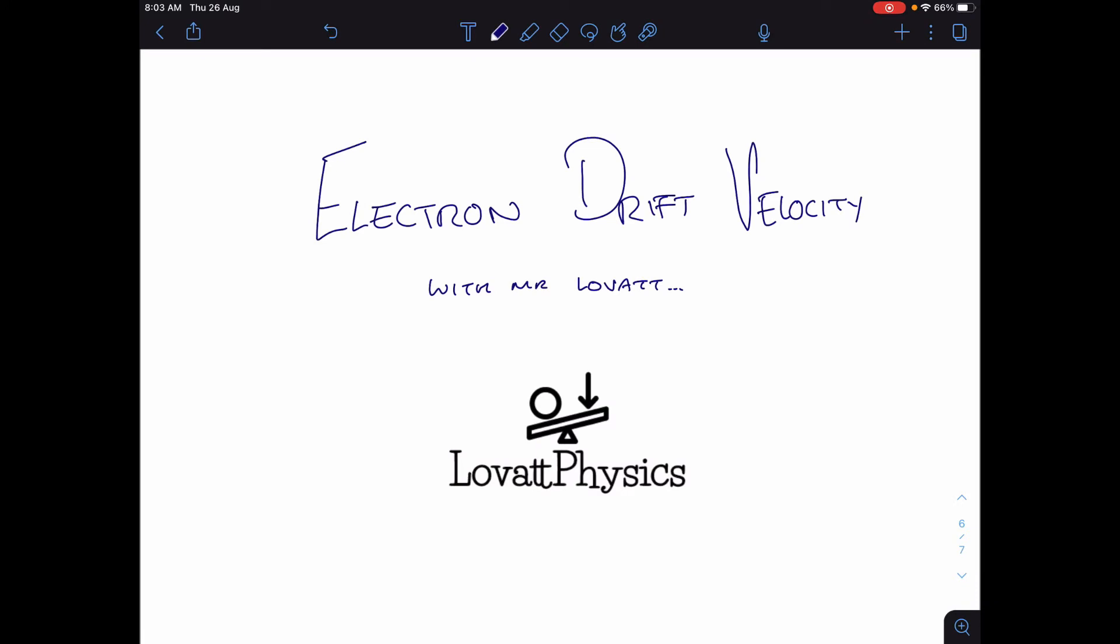This is the final episode in the 5.1 IB Physics series of videos about electron drift velocity.